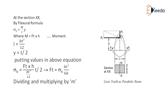Now if we take a section at XX from the adjoining figure, then by the flexural formula, sigma B is given as the ratio of M by I multiplied by Y, where M is given as the moment FT multiplied by H. The moment of inertia I is given as BT cubed by 12, and the distance from the neutral axis Y is taken as T by 2.